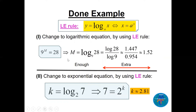Here's an example: if 9 to the power m equals 28, and we need the value of m, that's not an easy number. We use the LE rule to change it to logarithm form: m equals log base 9 of 28. You can use a calculator to get approximately 1.52. Another example: k equals log base 2 of 7 means 7 equals 2 to the power k, giving k approximately 2.81.